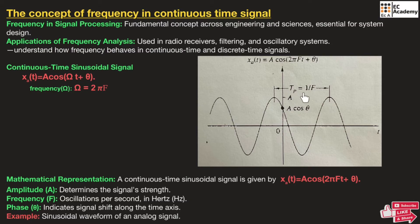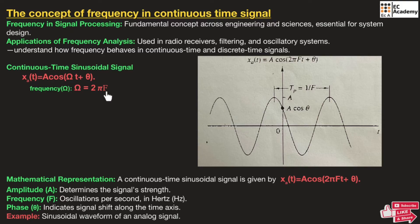From this time period Tp, we can find the frequency of the signal. A continuous time sinusoidal signal can be represented as XA(T) = A cos(ωT + θ), where ω is the frequency of the signal. The frequency is also represented by F, related to ω by the equation ω = 2πF.